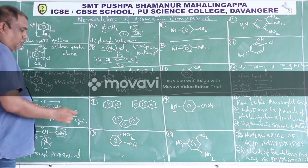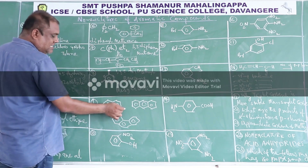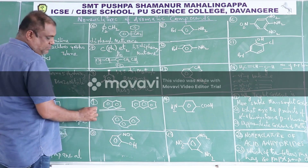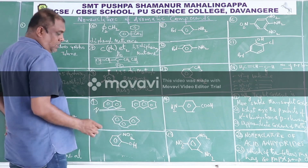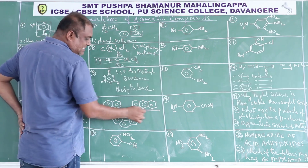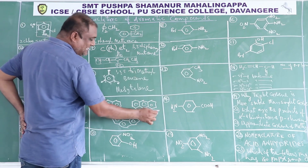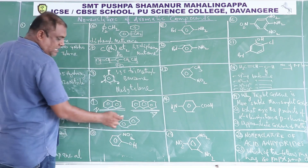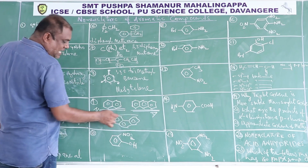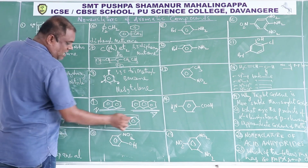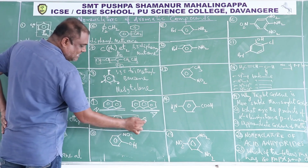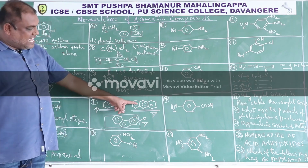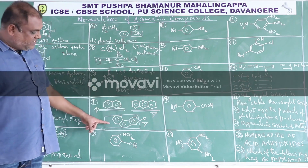If two benzene rings are fused together, it is called naphthalene. If three benzene rings are fused linearly, it is called anthracene. But if three benzene rings are attached in an angular arrangement, it is called phenanthrene. So: this is naphthalene, this is anthracene, this is phenanthrene.